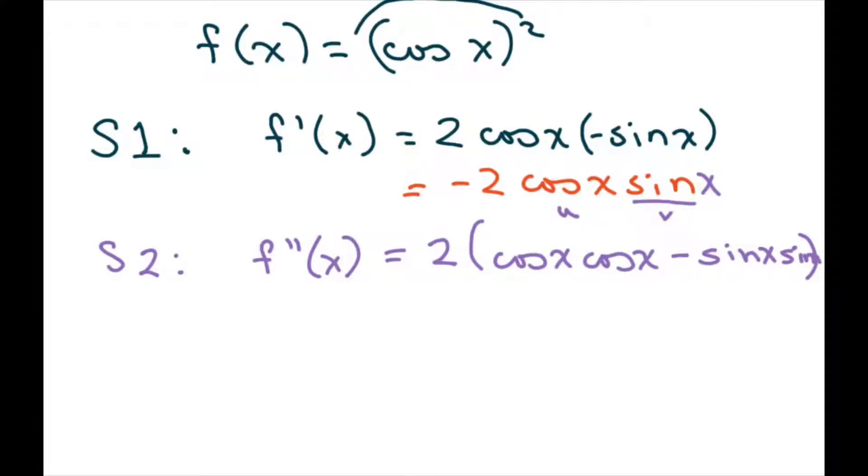And then basically, there's a negative 2 in front here. So now all we have to do is plug in π. So we get negative 2, and this is cosine squared, so we get cosine squared of π, and this is minus sine squared of π.